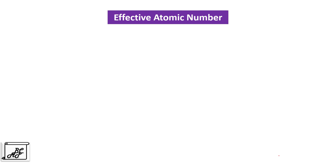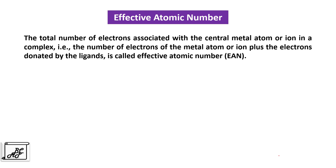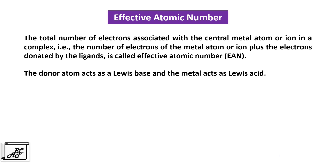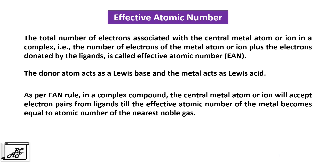Let's move to the next concept: effective atomic number. Sidgwick extended Lewis theory to explain the bonding in complex compounds. According to Sidgwick, the total number of electrons associated with the central metal atom or ion in a complex — that is the number of electrons of the metal atom or ion plus the electrons donated by the ligands — is called as the effective atomic number. The donor atom acts as a Lewis base and the central metal atom acts as a Lewis acid. As per the EAN rule, in a complex compound the central metal atom or ion will accept electron pairs from ligands until the effective atomic number becomes equal to the atomic number of the nearest noble gas.